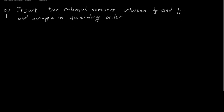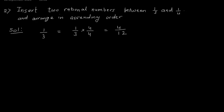Let us see another question. Insert two rational numbers between 1 upon 3 and 1 upon 4 and arrange in ascending order. For 1 upon 3 and 1 upon 4, their LCM is 12. So 1 upon 3 equals 1 upon 3 into 4 upon 4, which gives 4 upon 12. And 1 upon 4 equals 1 upon 4 into 3 upon 3, which gives 3 upon 12.